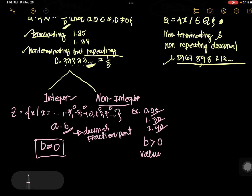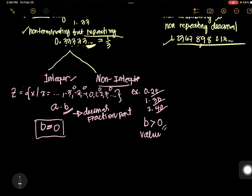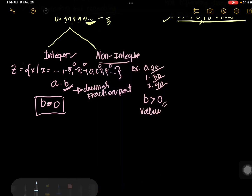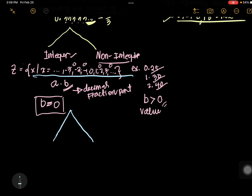In integer, the fractional or decimal part is 0, while in non-integer it has its value. Integers are subdivided into 2 again. We have the whole numbers and the negative integers.